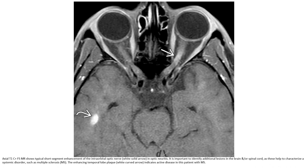Let's see the first case. Axial T1 post-contrast with fat suppression shows typical soft-tissue enhancement of the intra-orbital optic nerve. In optic neuritis, it is important to identify additional lesions in the brain and spinal cord to characterize systemic disorders such as multiple sclerosis. Enhancing lesions indicate active disease in patients with multiple sclerosis.